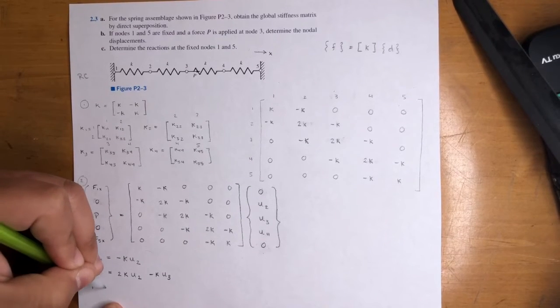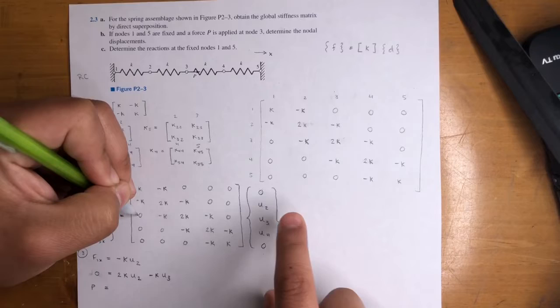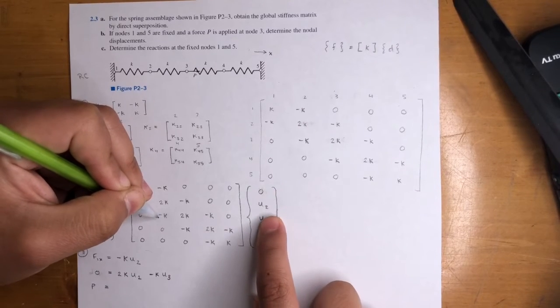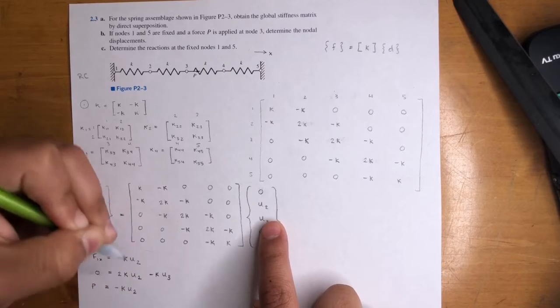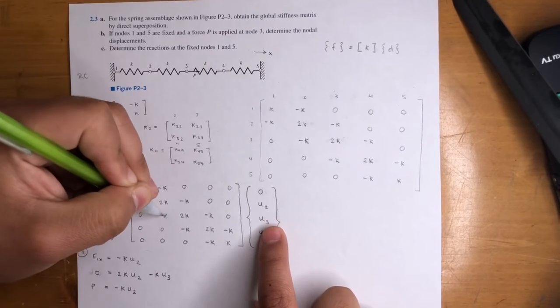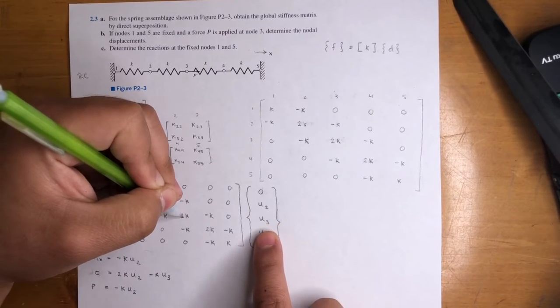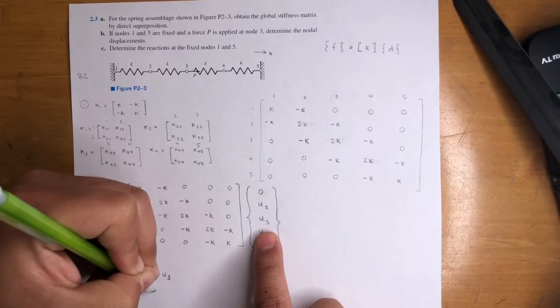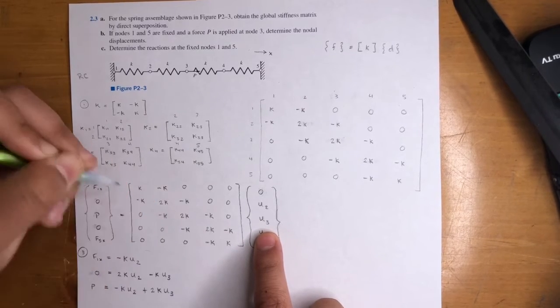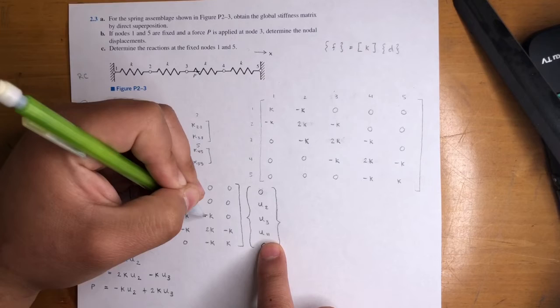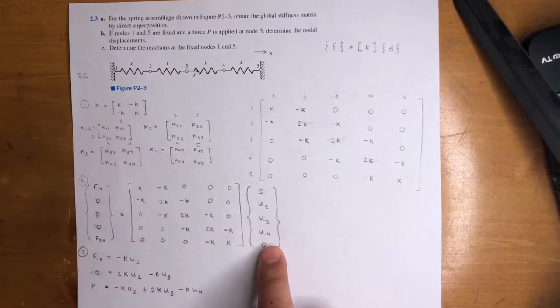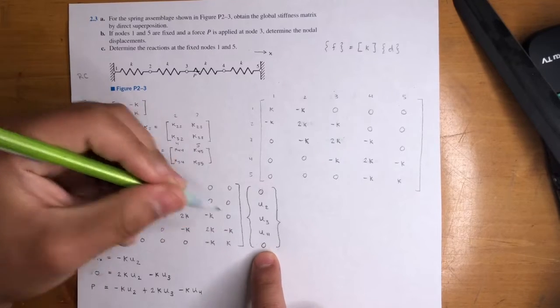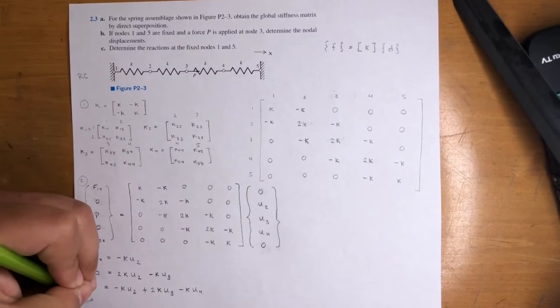Oh, I keep forgetting to put zero. Right? Because it's zero. Okay, zero is equal to negative k times zero plus 2ku2 minus ku3. Zero, zero. Cool. Cool. P, force 3, right? P is equal to zero times zero minus k times U2. Oh, where am I? Right here. Plus 2ku3. Okay. Minus ku4.